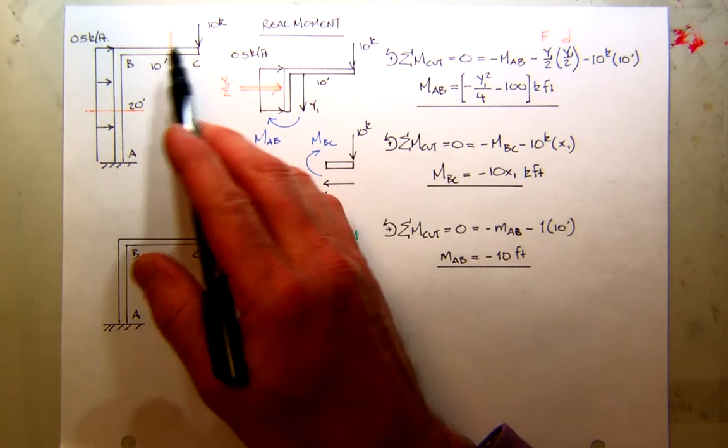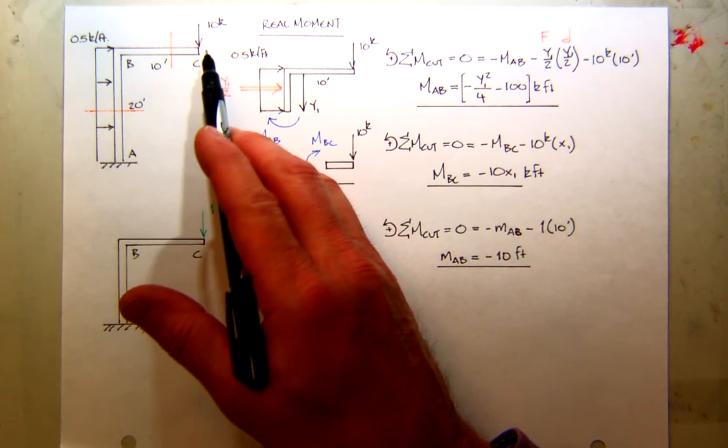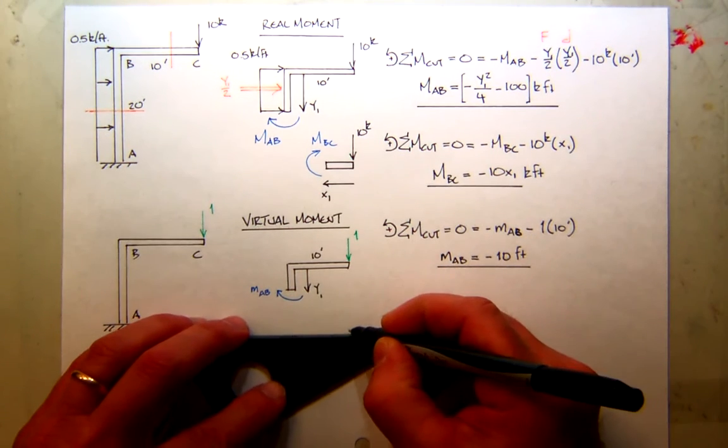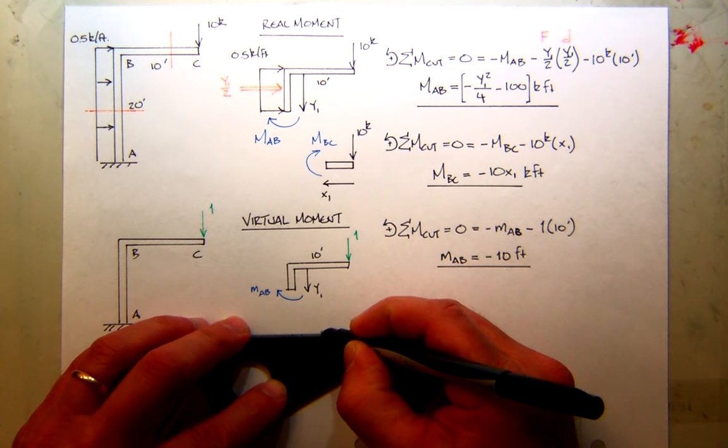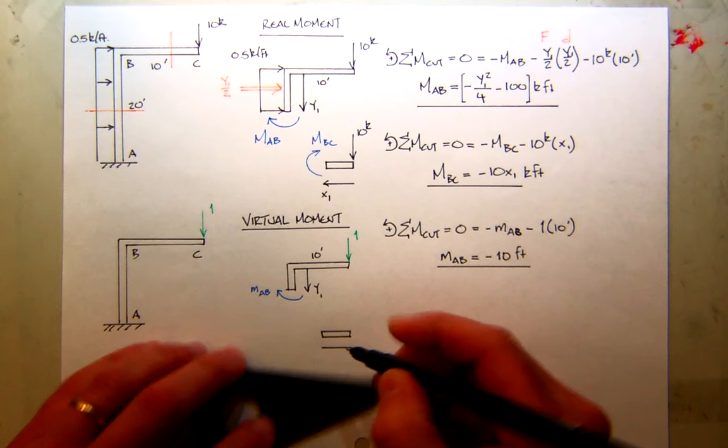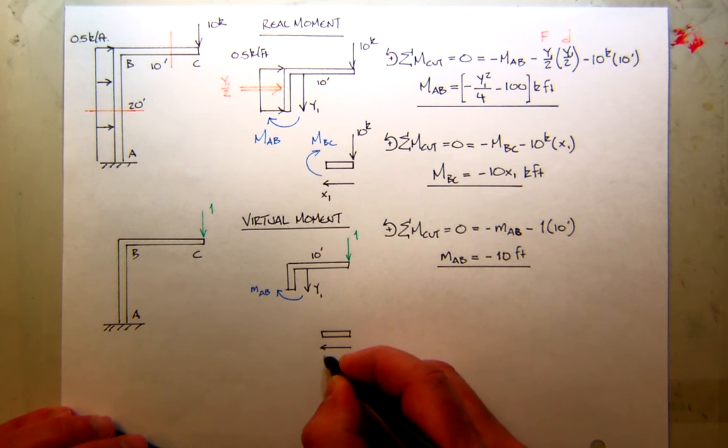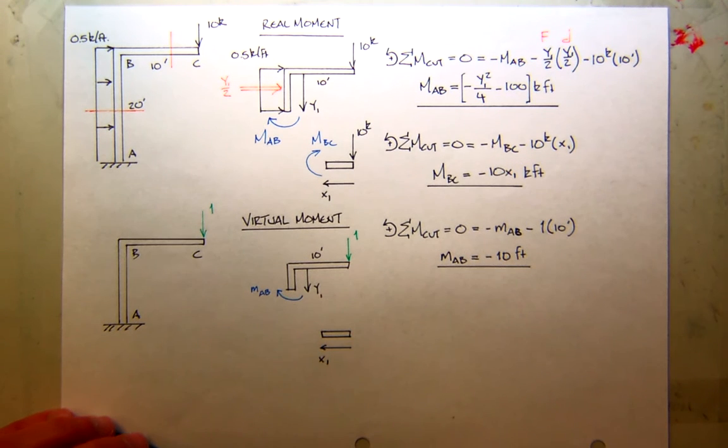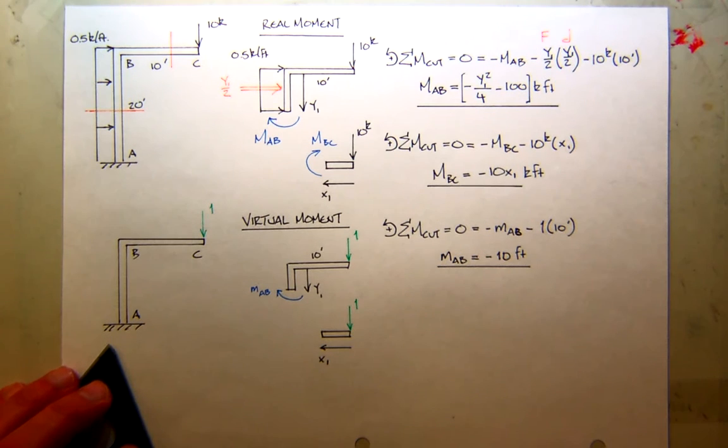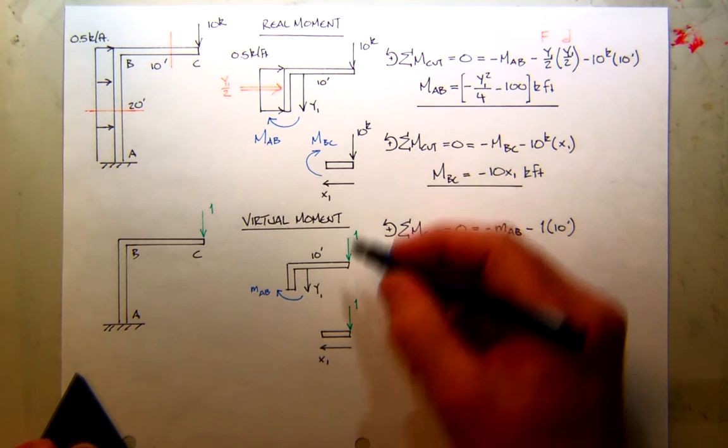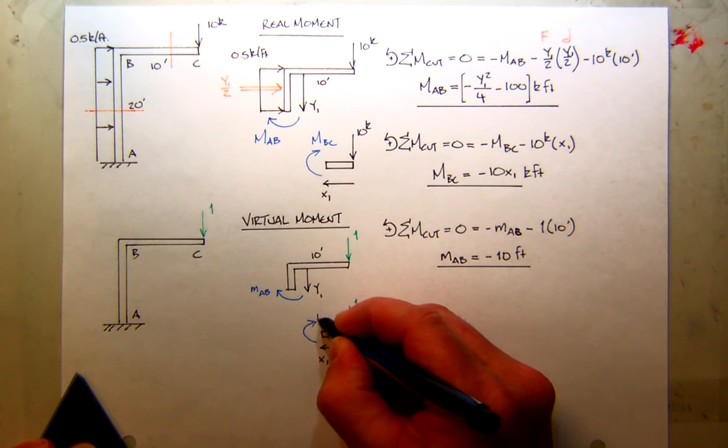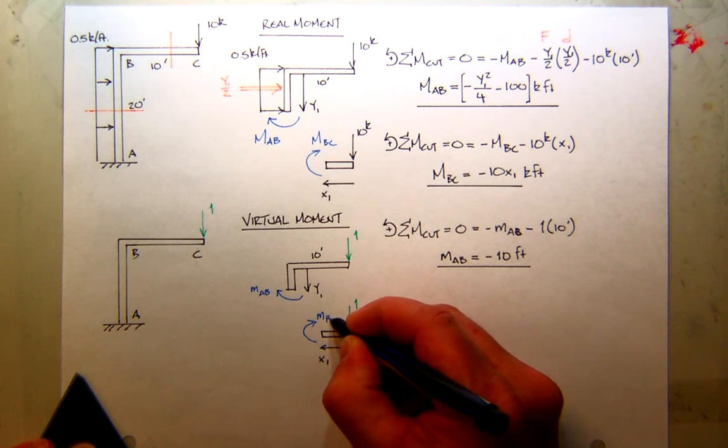So again, looking at the next section, which would be here, section BC, I made a cut and look at the right-hand side. That's how I did my real moment. I'm going to do the same situation for the virtual moment. So just like before, I'm going to orient my coordinate from right to left, call it X1. On the end of the cantilever, I have my virtual load. And then internally, I'll assume the same direction for my virtual moment in BC.